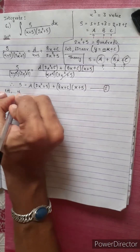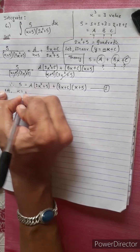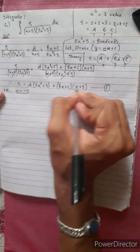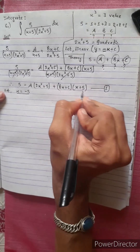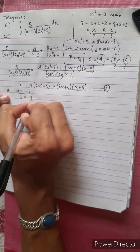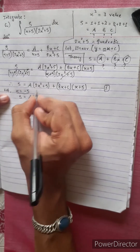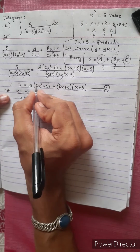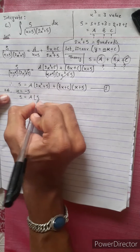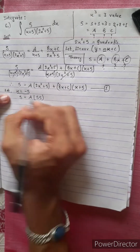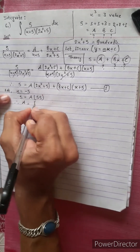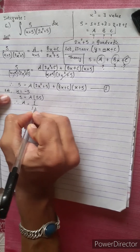Let x equals minus 5. Then x plus 5 becomes 0. So 5 equals A times (2 into 25 plus 5), which is 2 times 25 is 50, plus 5 is 55. Therefore A equals 5 over 55, which is 1 by 11.